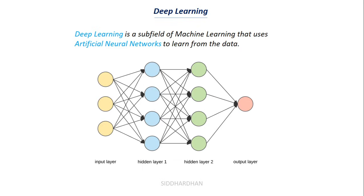To summarize: artificial intelligence is about building smart machines; machine learning is a technique to implement artificial intelligence; and deep learning is a subset of machine learning that uses artificial neural networks. I hope you understand the topics covered in this video. In future videos I will be making more complex and hands-on content, so stay tuned. Thank you.